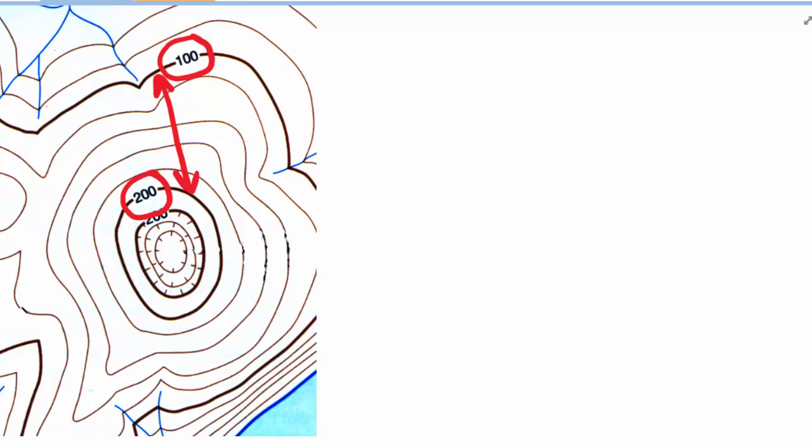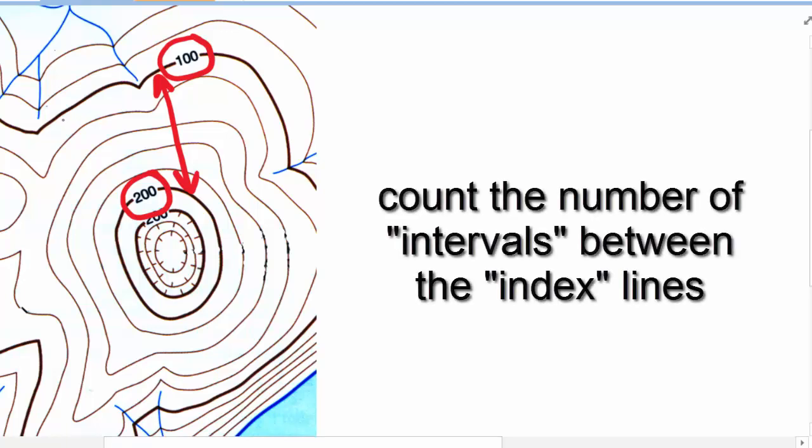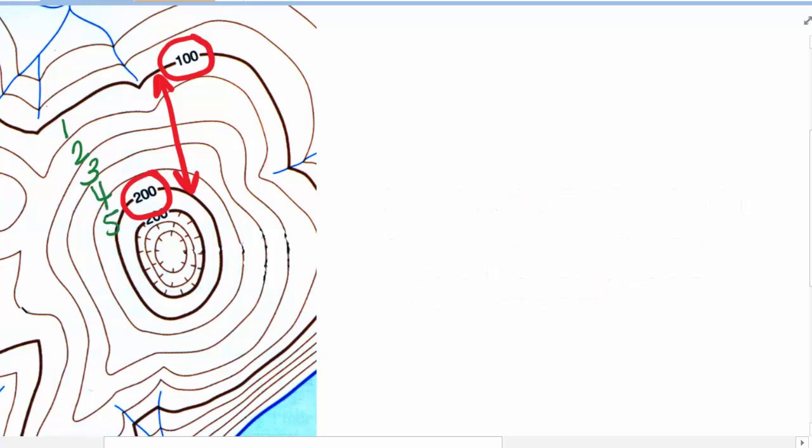Then we need to count the number of intervals between those two index lines. And here we can note one, two, three, four. There are five intervals between those two lines.